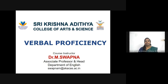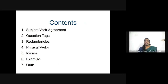At the end of this lesson, there is a quiz to test your proficiency and you will receive an e-certificate if your score is more than 50%. This course throws light on subject-verb agreement, question tags, redundancies, phrasal verbs, and idioms. You have a few exercises to decode the concepts, and finally the quiz, which you can attend only once.